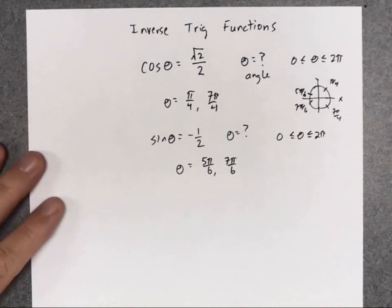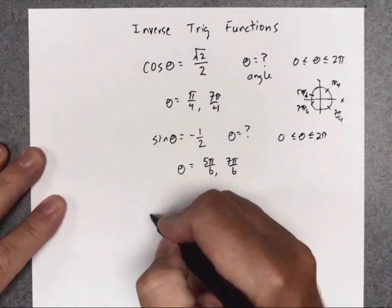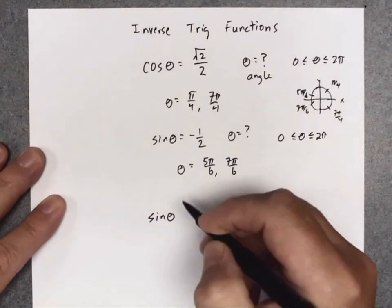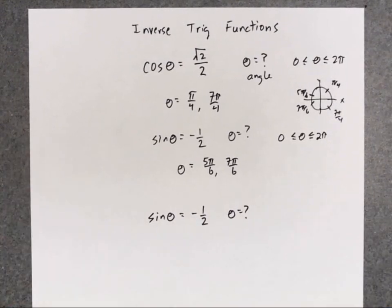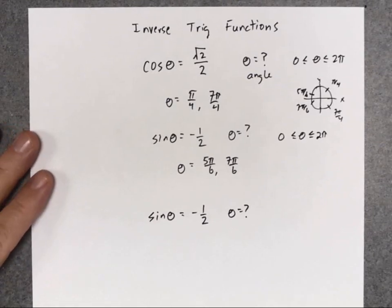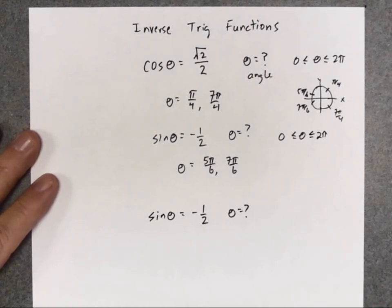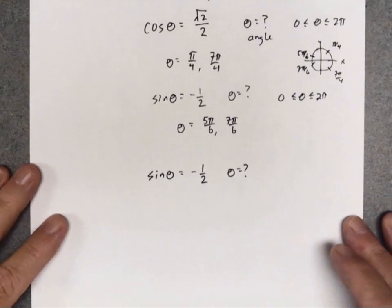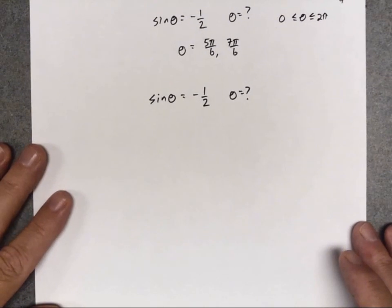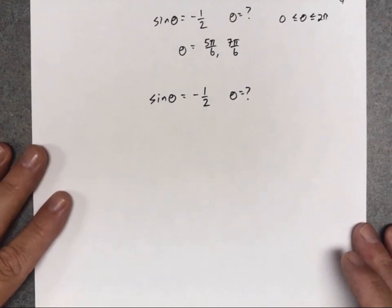Now we're going to do something a little different. We're going to take this same sine equation and try to solve it again, except we're going to use a different method — an inverse trig function. Inverse trig functions are used to solve equations like this, but there's going to be a certain kind of limitation. Before we do that, let me take a brief detour and talk about a principle in math that you've used before, because we're going to use the same principle when explaining how inverse trig functions work.